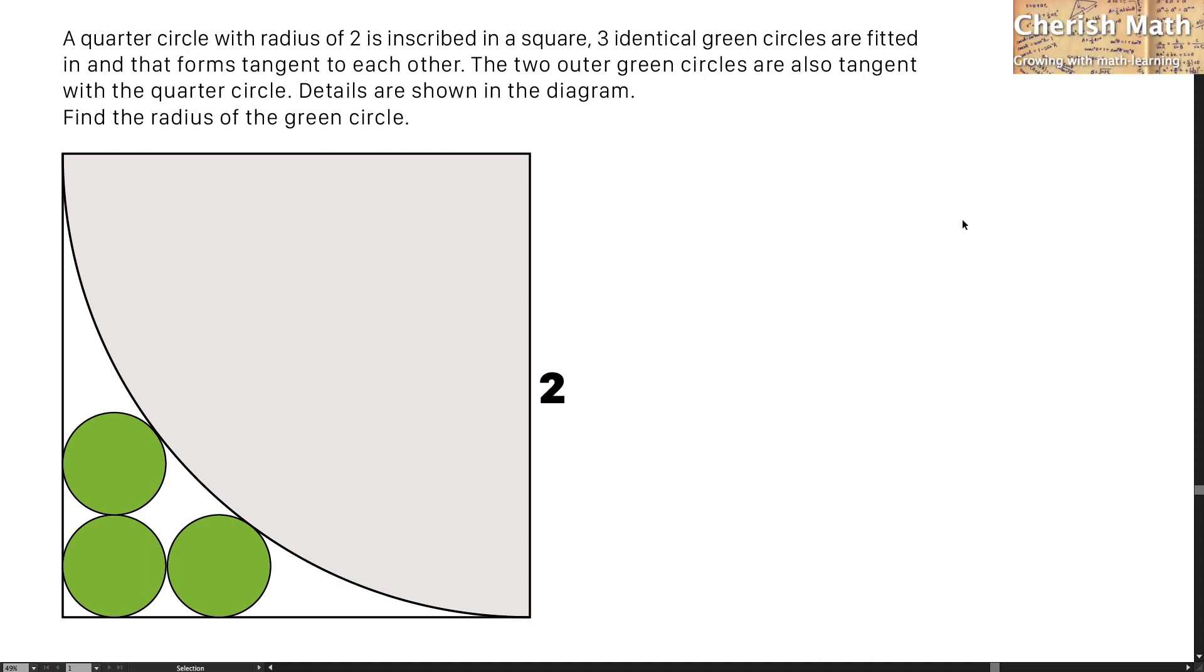Say hi from Cherish Math. This is the question. A quarter circle with radius of 2 is inscribed in a square. Three identical green circles are fitted in and that forms tangent to each other.